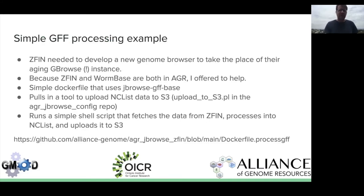So what is it good for? Here's a simple example. ZFIN, the zebrafish model organism database, needs to develop a new genome browser to replace their aging JBrowse instance. Because ZFIN and WormBase are both part of AGR, I offered to help. I created a simple Dockerfile that uses jbrowse2gffbase, and included a tool that will upload the nclist data to S3, which makes it really easy. It runs a simple shell script that fetches the data from ZFIN, processes it into nclist data, and uploads it. Here's the link for that Dockerfile.